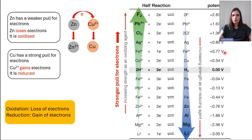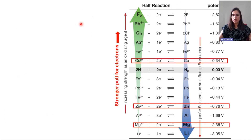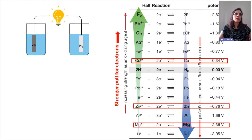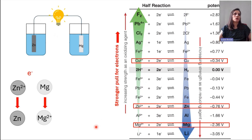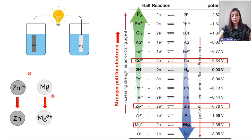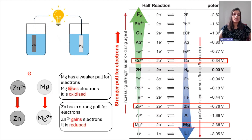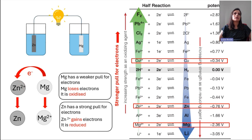Now that you know this table, I could ask you: what happens if I do a different connection — I don't connect zinc with copper, but this time I connect zinc with magnesium? Who will give electrons to who? We look at the table and see that zinc is higher up, so it has a stronger pull for electrons than magnesium. So we can expect that magnesium has a weaker pull for electrons and magnesium will lose electrons. But zinc, that has a stronger pull for electrons, will gain these electrons. So this time, it's magnesium that gives electrons to zinc.